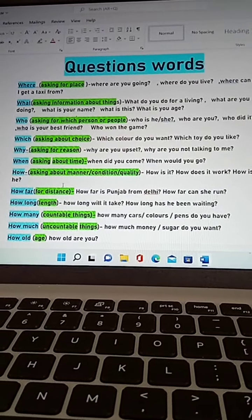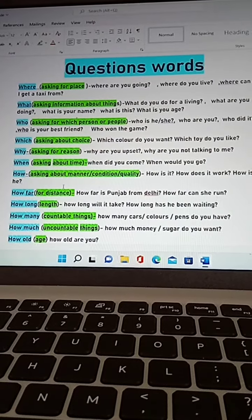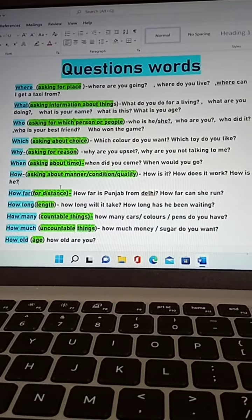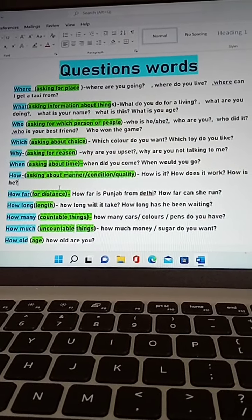First one is where. Where is used for asking about a place. Where are you going? Where do you live? Where can I get a taxi from?